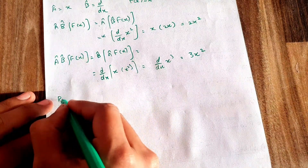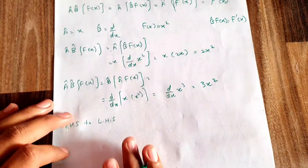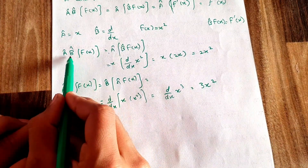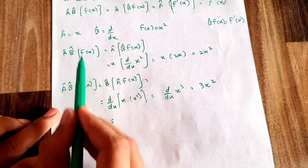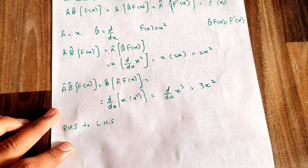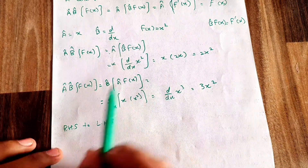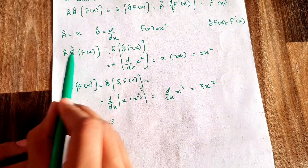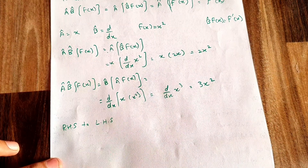Usually the order of multiplication of operators goes from right-hand side to left-hand side. First apply B on f(x), then apply A on the result. If the order is reversed — applying A first and B after — the answer will be different. So the standard rule is to apply operators from right to left.